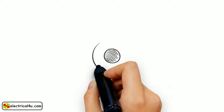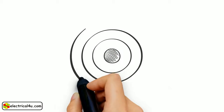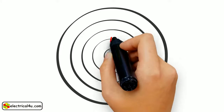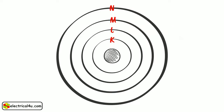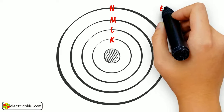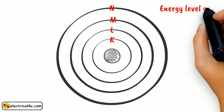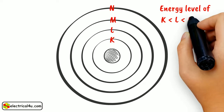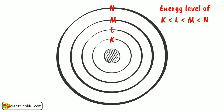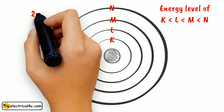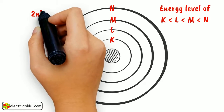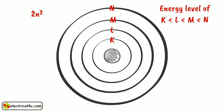The energy levels are denoted by the letters K, L, M, N, etc., where K is the nearest orbit to the nucleus and having the lowest energy level. Conversely, the outermost orbit has the highest energy level. The maximum number of electrons in any energy level is given by 2N², where N is an integer and represents the principal quantum number.